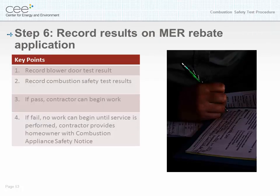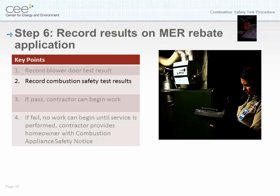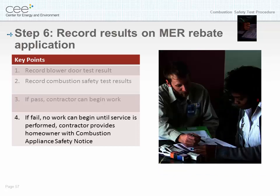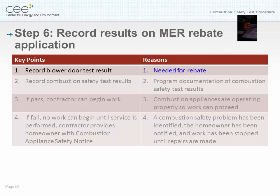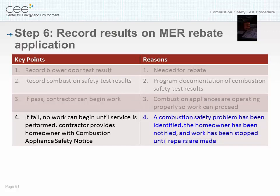Step six: record results on MER rebate application. Key points: number one, record the blower door test results; number two, record combustion safety test results; number three, if it's a pass, the contractor can begin work; number four, if it is a fail, no work can begin until service is performed — the contractor provides the homeowner with a combustion safety appliance notice. Reasoning: the blower door test results are needed for the rebate. Program documentation records whether combustion appliances are operating properly so work can proceed, or whether a combustion safety problem has been identified and the homeowner has been notified and work stopped until repairs are made.